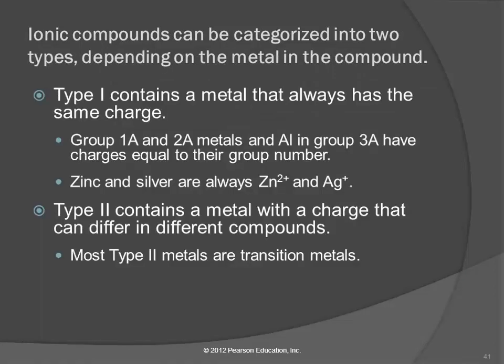They typically call these type 1 and type 2. The type 1 compounds have a metal that forms one type of ion. The type 2 compounds have metals that form two or more types of ions. The type 1, the ones that always have the same charge, are going to be the group 1A, 2A metals, aluminum in group 3A, and zinc and silver. You have to memorize zinc and silver.